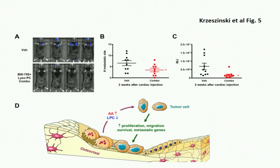Our findings reveal that the shift in lipid osteoclastokines synergistically stimulates cancer cell proliferation, migration, survival, and expression of pro-metastatic genes. Pharmaceutically, combined treatment with LPCs and BW755C impedes breast cancer bone metastasis. Our findings elucidate a novel paracrine mechanism for the cancer and osteoclast vicious cycle and uncover new therapeutic targets for bone metastasis. Please read our paper for more details. Thank you for watching.